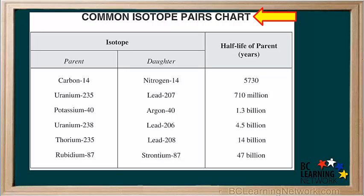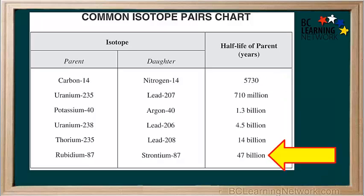The Science 10 data booklet has a chart showing common parent-daughter isotope pairs. It also shows the half-life of each of the parent isotopes. We can see that it takes 5,730 years for half of a sample of carbon-14 to decay to nitrogen-14, whereas it takes 47 billion years for half of a sample of rubidium-87 to decay to strontium-87.